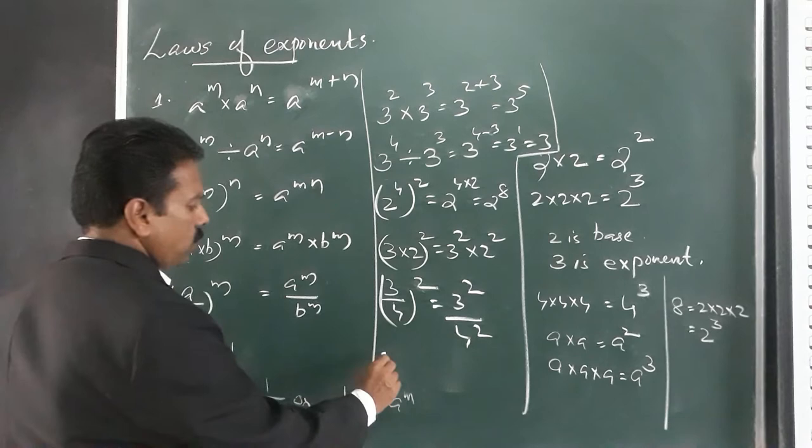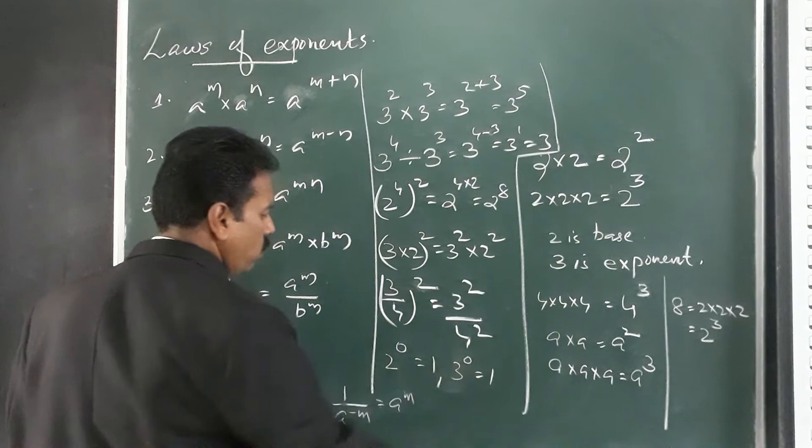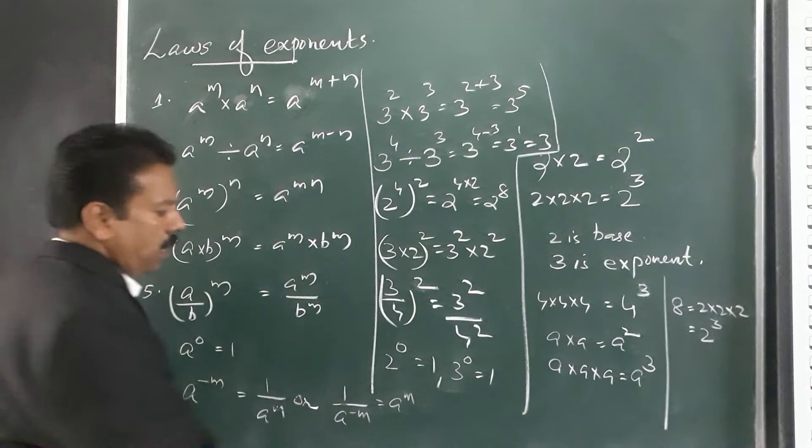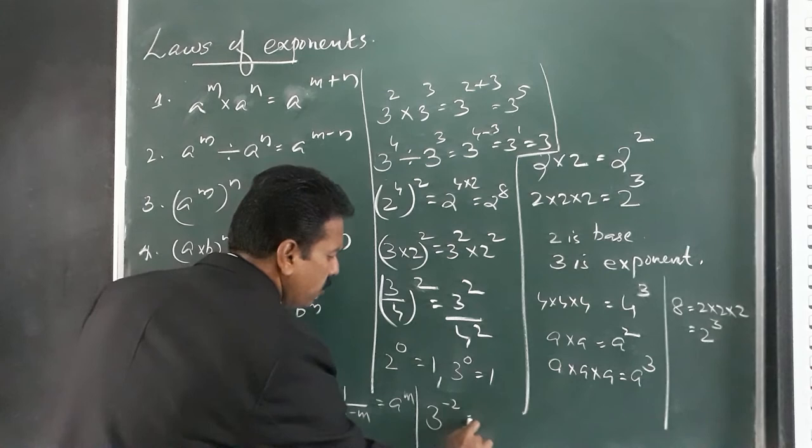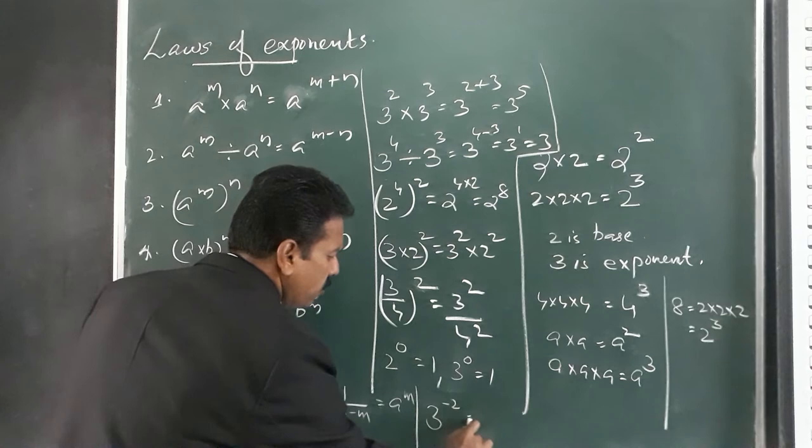For negative exponents: 1 by 3 raised to minus 2 equals 3 squared. These are the simple examples for the laws of exponents.